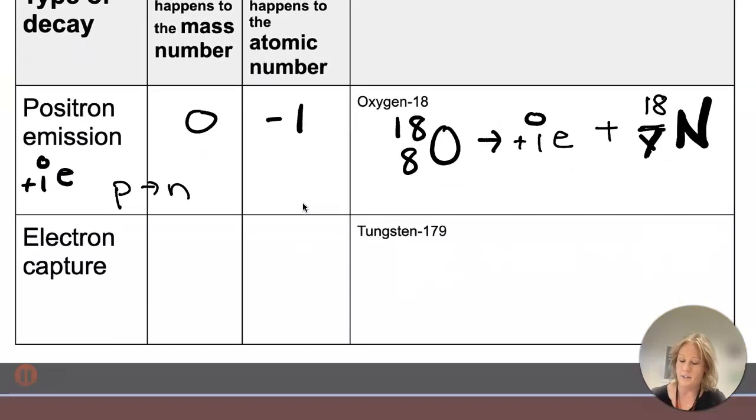All right, electron capture is different than all the previous, because the electron is going to actually be on the left side of the yield arrow. Everything else, you started with a parent isotope, and then it right away changed, so you saw that yield sign right away.